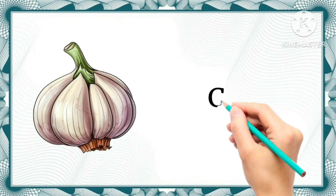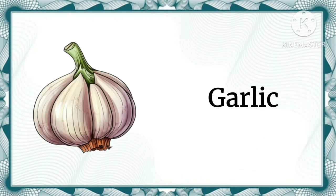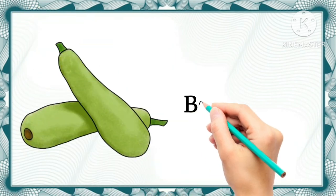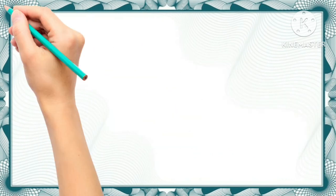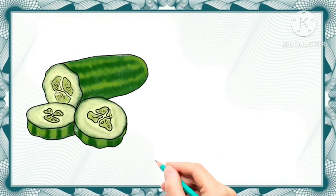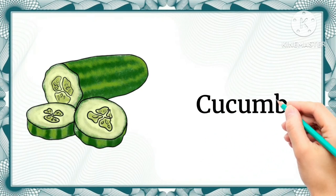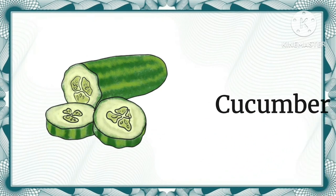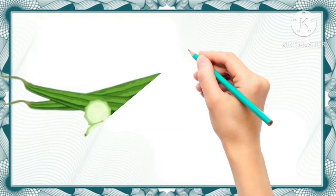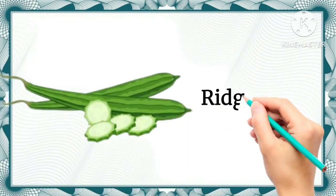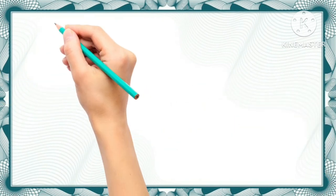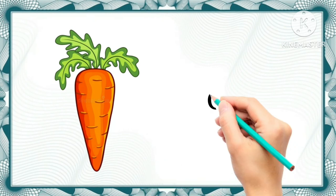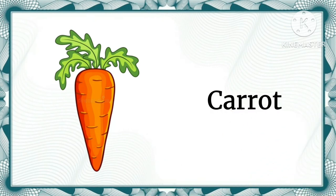Garlic - this is garlic. Bottle gourd - this vegetable is bottle gourd. Cucumber - this is cucumber. Ridge gourd - this is ridge gourd. Carrot - this is carrot.